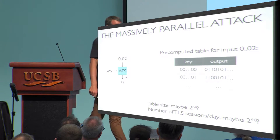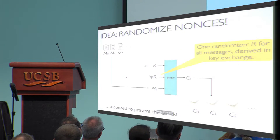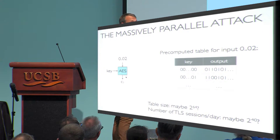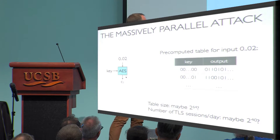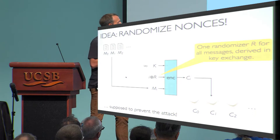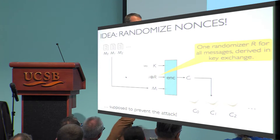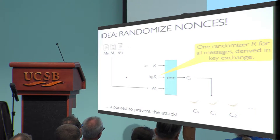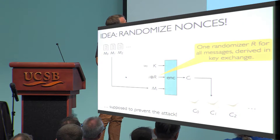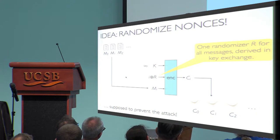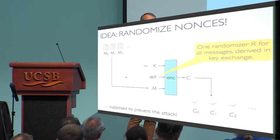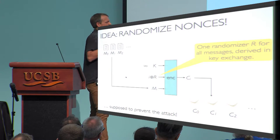The TLS working group noted that an important property of this attack is that everyone uses the same input value — without that, you can't precompute the table. So instead of using all the same value, let's add a randomizer and randomize the nonce before giving it to AES. They use a 96-bit random value chosen at connection setup — derived from the same key material — and XOR it with the sequence number before passing it to the authenticated encryption.